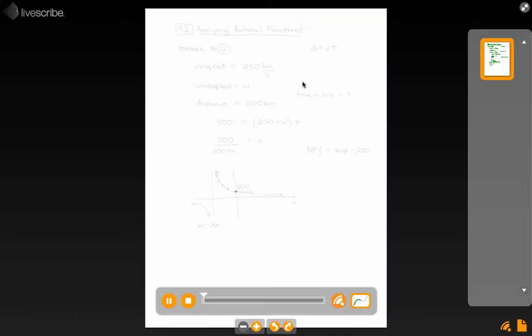This next example comes out of section 9.2, Analyzing Rational Functions. This one I've taken right out of the assignment for 9.2. It's textbook number 12, page 453.